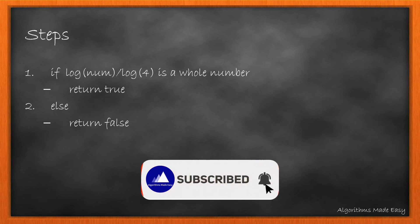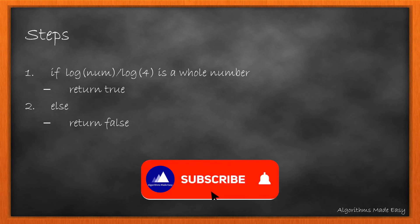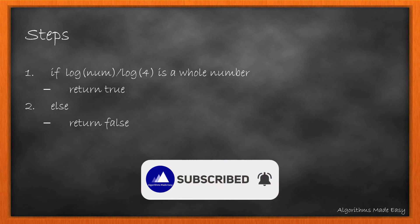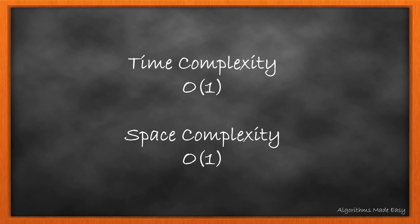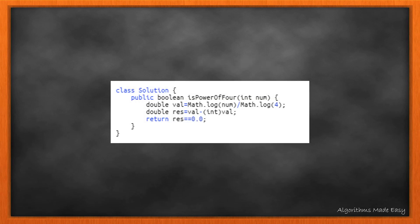The algorithm is exactly what we just said now. If log of number divided by log of 4 is a whole number, return true. Else, return false. The time and space complexity of this approach is O(1). Here is the actual code snippet for the method.